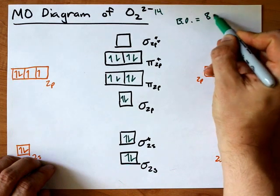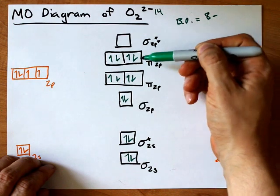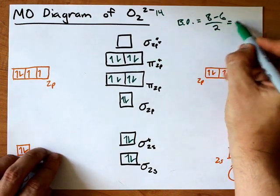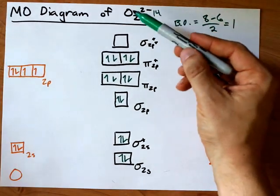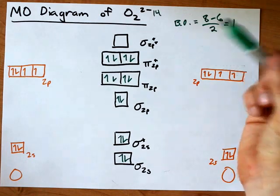Minus the number of electrons in antibonding orbitals, 1, 2, 3, 4, 5, 6, divided by 2. That makes 2 over 2, which is 1, which means that in the O2 2- species, there is a stable single bond.